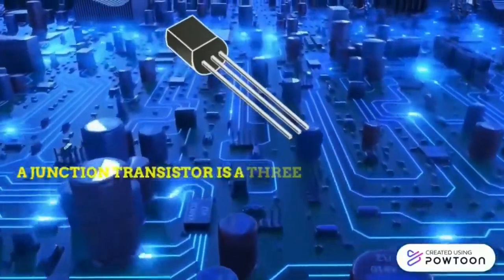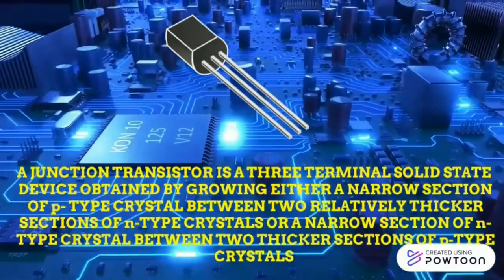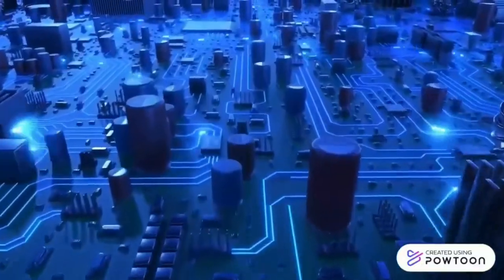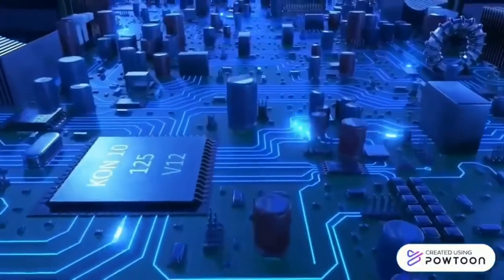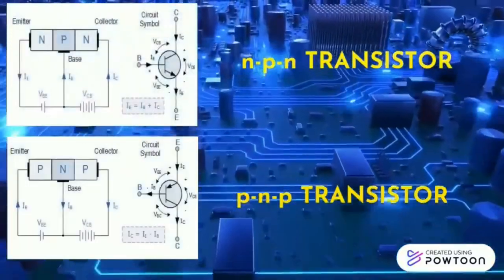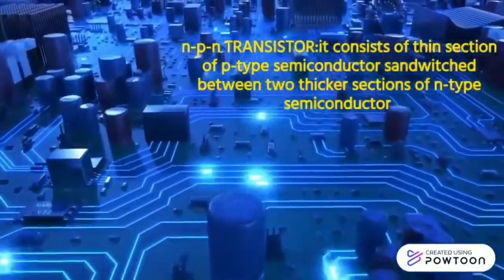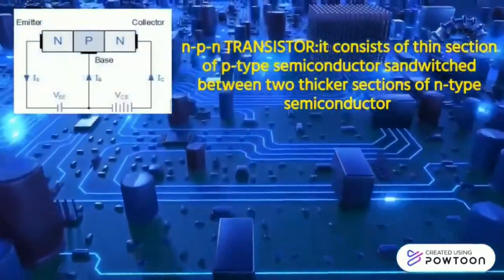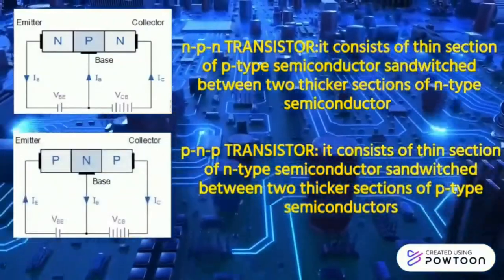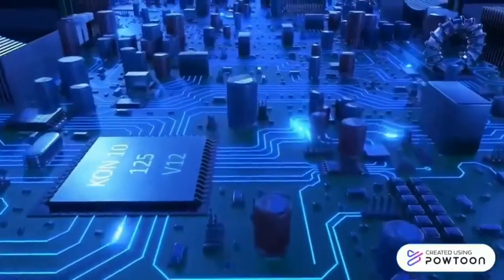What is a transistor? A transistor is a semiconductor device used to amplify or switch electronic signals and electrical power. There are mainly two types: NPN transistors and PNP transistors. An NPN transistor consists of a thin section of p-type semiconductor sandwiched between two thicker sections of n-type semiconductor, whereas a PNP transistor consists of a thin section of n-type semiconductor between two thicker sections of p-type semiconductor.